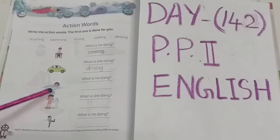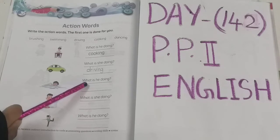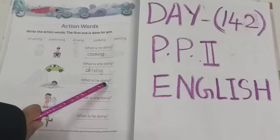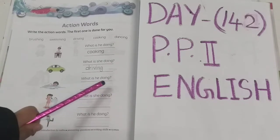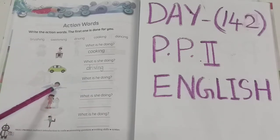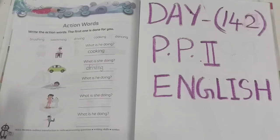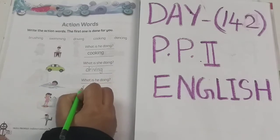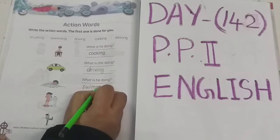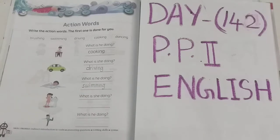See the next picture, then see the question here. What is he doing? Swimming. Is he brushing? No. He is swimming. So you have to write the spelling of swimming in this blank — S-W-I-M-M-I-N-G. Swimming.